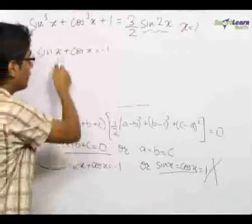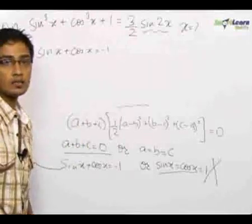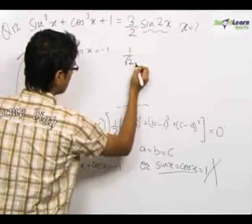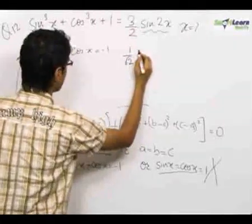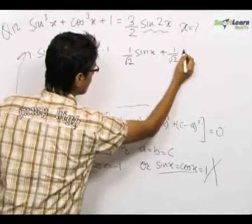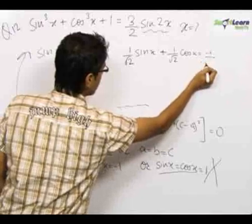We again see that the given equation is of the form a·sinx + b·cosx = c. So we multiply both sides by 1/√2. We get (1/√2)sinx + (1/√2)cosx = -1/√2.